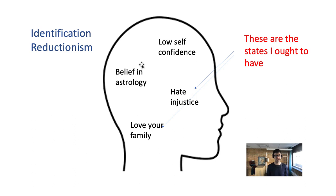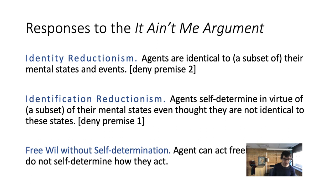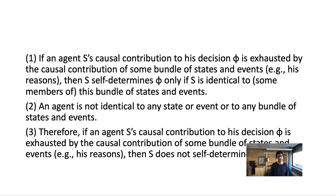That leaves the last reply: you could think you can have free will without self-determination. But Franklin points out that it seems really odd that you could be morally responsible for your choices and act freely even though it's not you who self-determines that decision. And that's all Franklin wanted to say about the it-ain't-me argument.